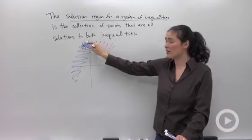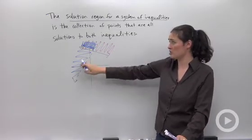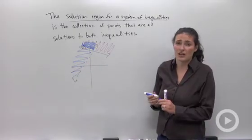What this means is that any point I picked in this darkened solution region where my purplish and my blue overlapped, that would be a point that works in both original inequalities.